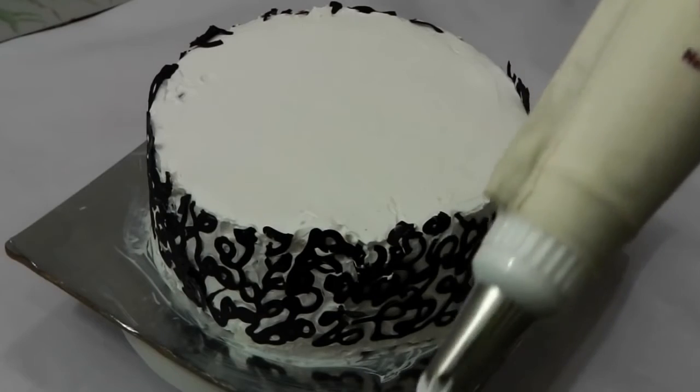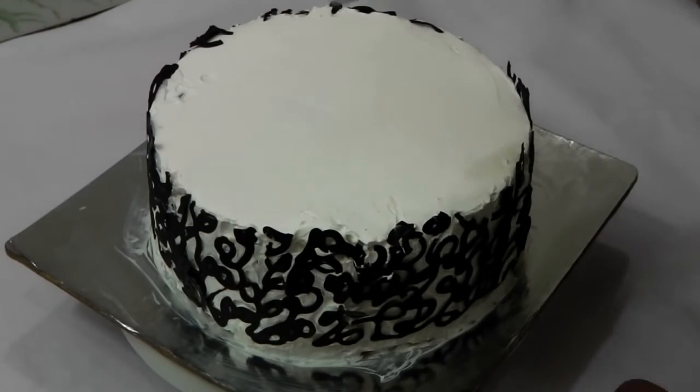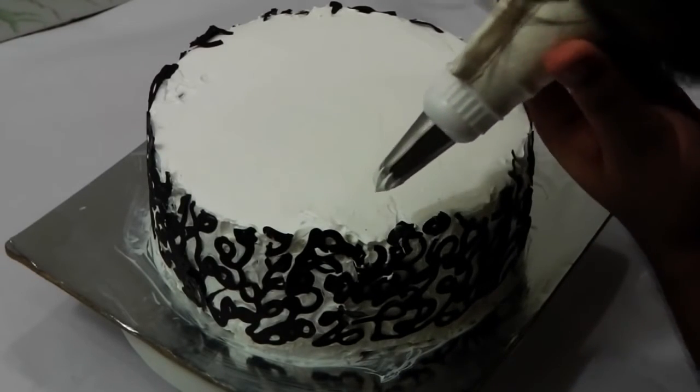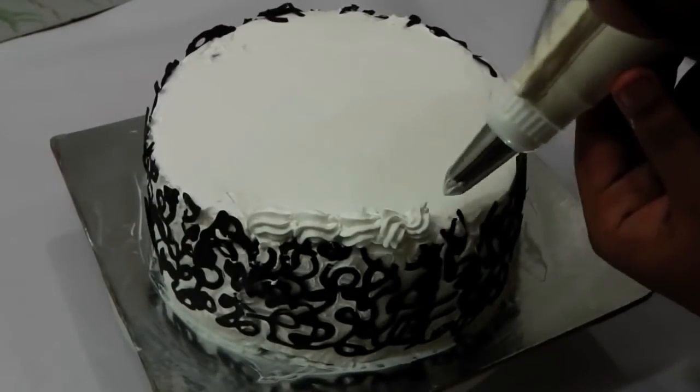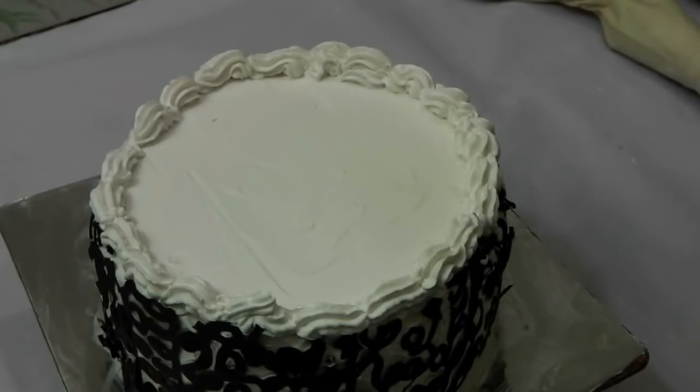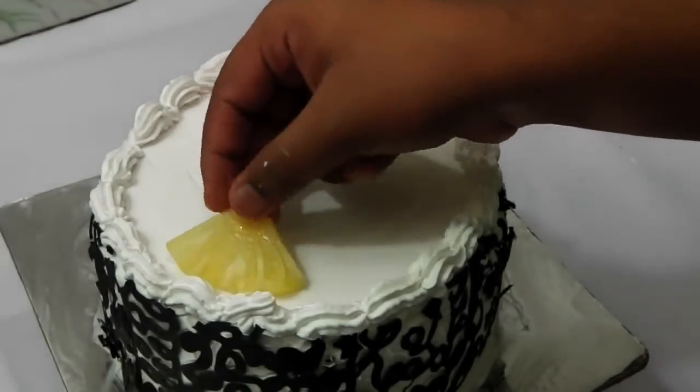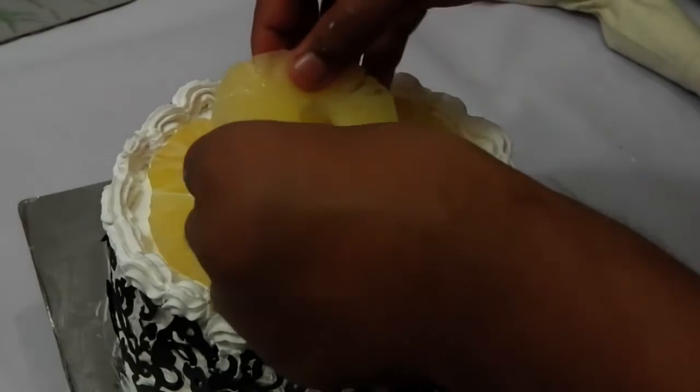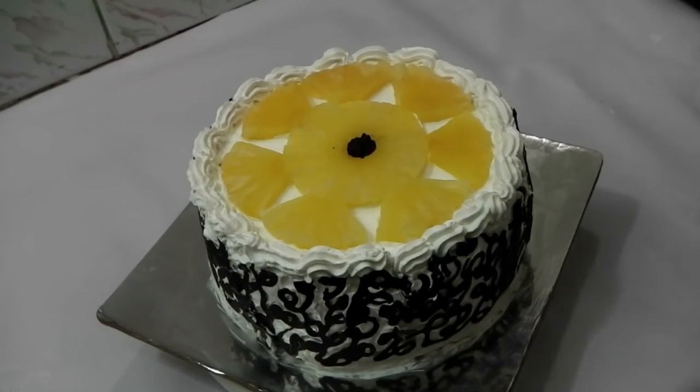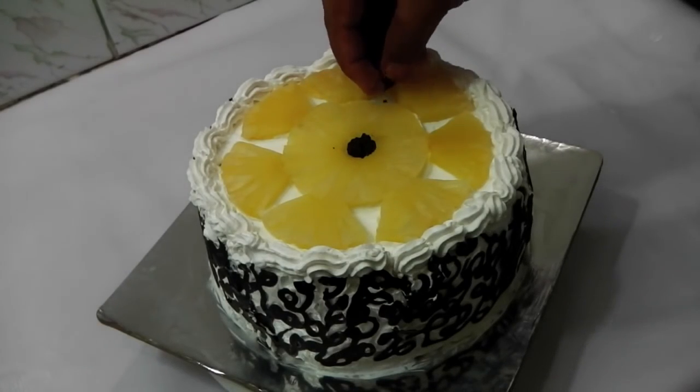Here I have a piping bag with a star nozzle fitted. I'm going to make shell border in this. Now we are going to layer pineapple slices. Now we're going to keep a whole pineapple slice here. Let's fill this empty areas with some chocolate.